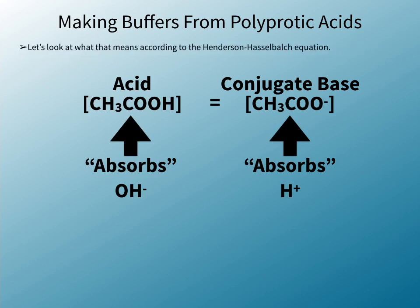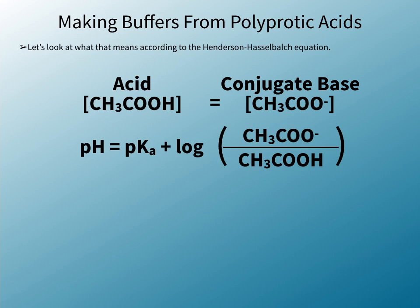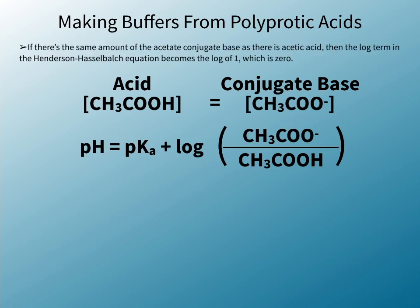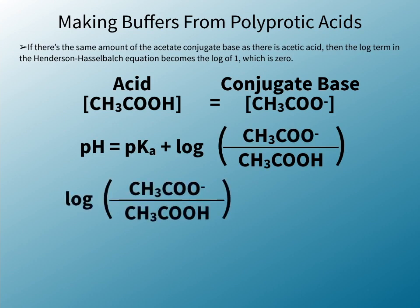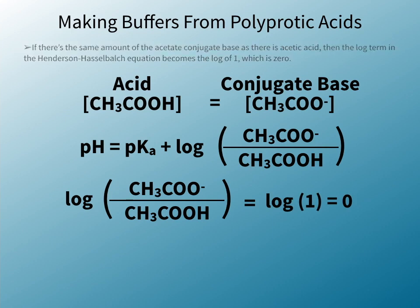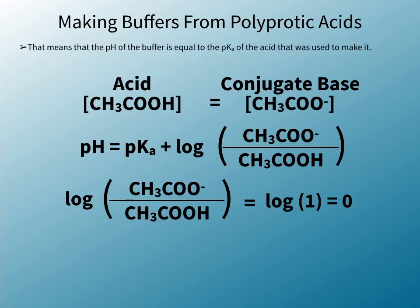Let's look at what that means according to the Henderson-Hasselbalch equation. If there's the same amount of the acetate conjugate base as there is acetic acid, then the log term in the Henderson-Hasselbalch equation becomes the log of 1, which is 0. That means that the pH of the buffer is equal to the pKa of the acid that was used to make it.